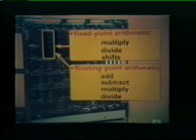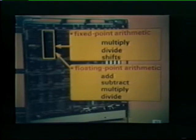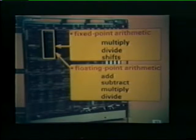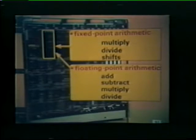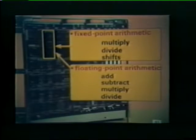An additional socket is provided on the microcomputer board to accommodate a fifth semiconductor chip. This optional chip extends the LSI-11 instruction set to include fixed-point and floating-point arithmetic functions. Fixed-point operations include multiply, divide, and multiple shifts. Floating-point operations include add, subtract, multiply, and divide.